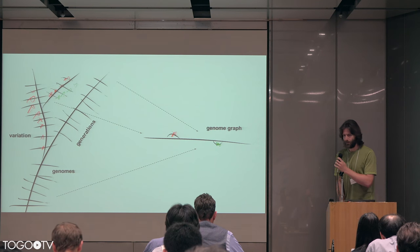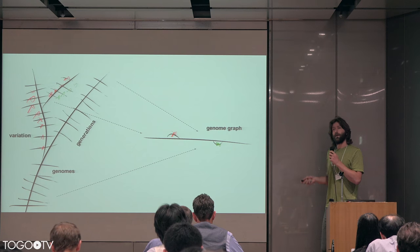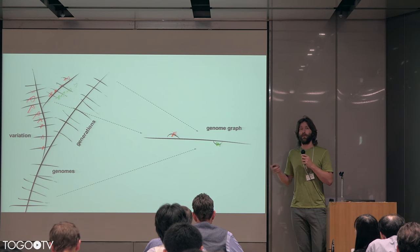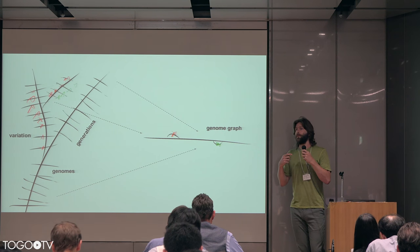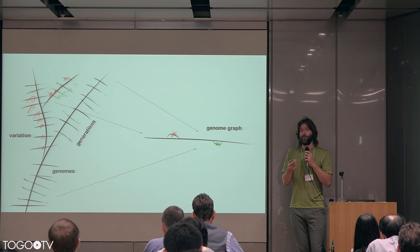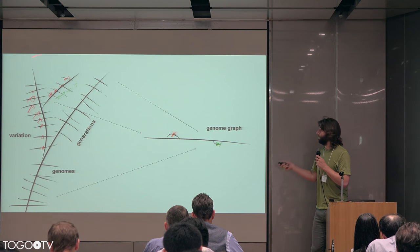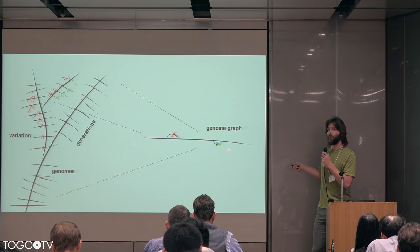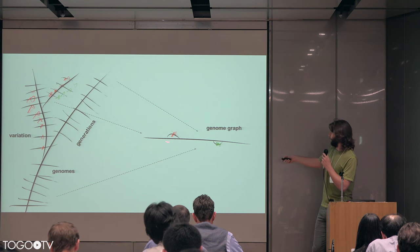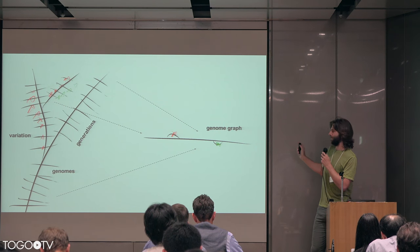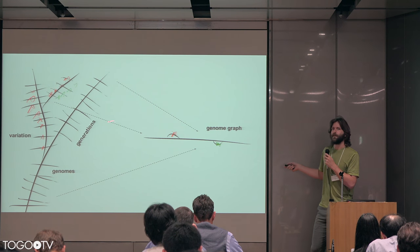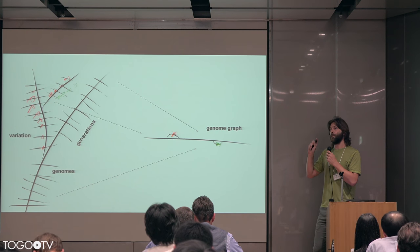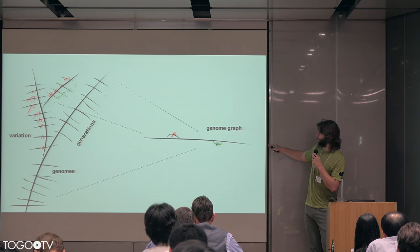What I and several other people today are going to talk about is a process through which we can model these differences in the same data structure. So now a reference has the variation and the sequence embedded in it. We don't have to think about all the references at the same time, which is expensive and annoying. We can compress them down into one genome graph — it contains all the information we're interested in, in a much more compact space. And yet it isn't totally lossy; we still have those variants of interest in it.